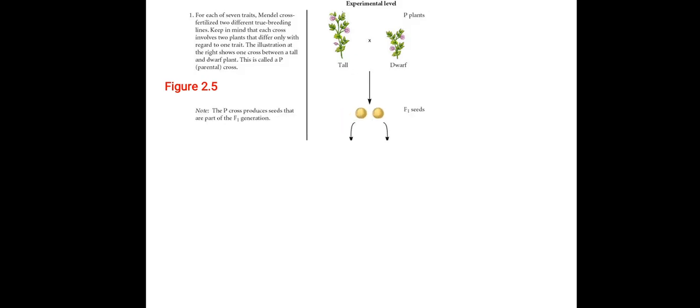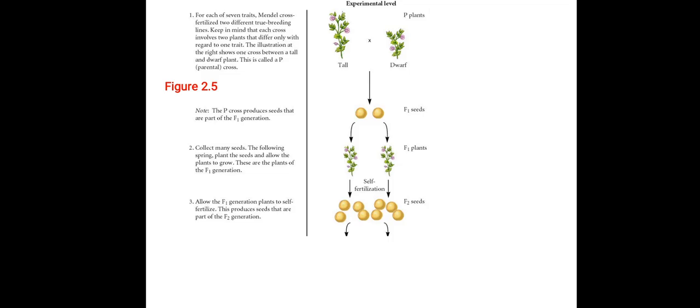The parental cross produced the seeds that are part of the F1 generation. Then he collected many seeds. The following spring, he planted these seeds and allowed the plant to grow. These are the plants of the F1 generation. Then he allowed the F1 generation plants to self-fertilize. This produced the seeds that were part of the F2 generation. Then he collected the seeds and planted them the following spring to obtain the F2 generation plants.